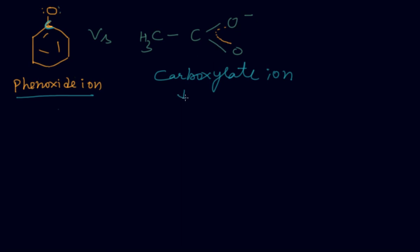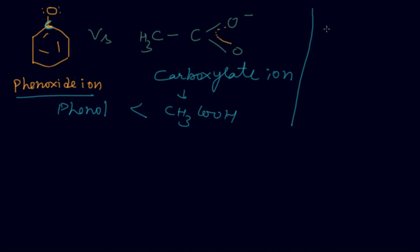So carboxylic acid is more acidic than phenol. No doubt phenol has a greater number of resonating structures, but it is not as stable as the carboxylate ion. This is very important. Acetic acid also has a carbonyl group, but it does not participate in carbonyl compound reactions — we will discuss aldehydes and ketones in the next chapter.